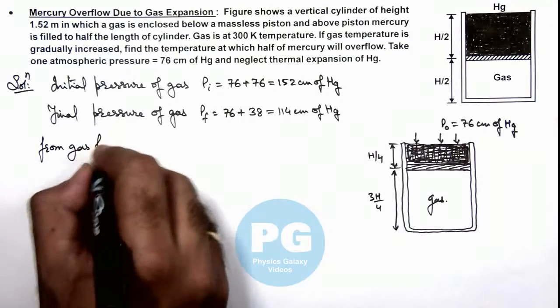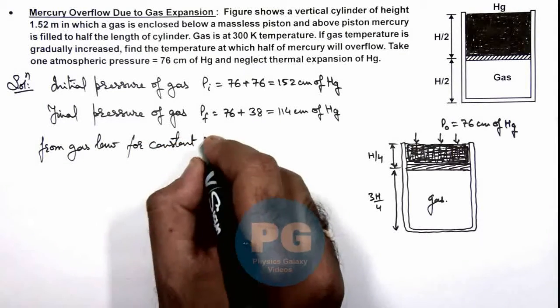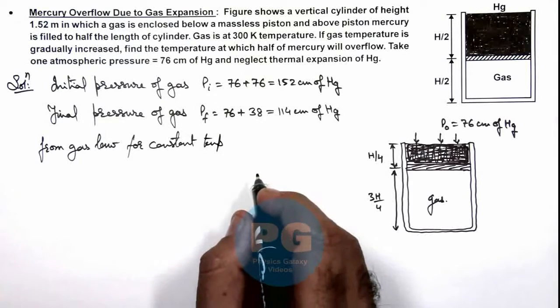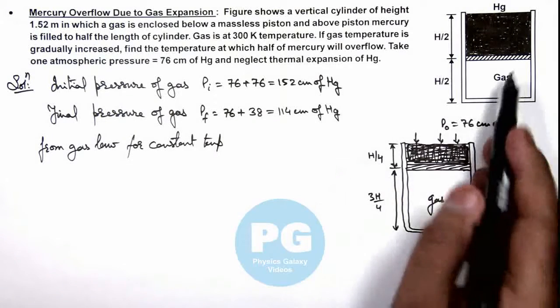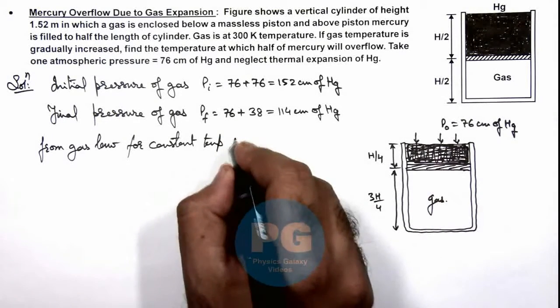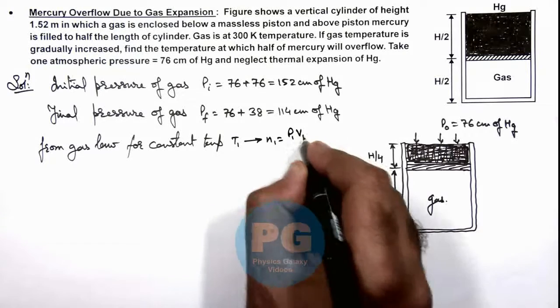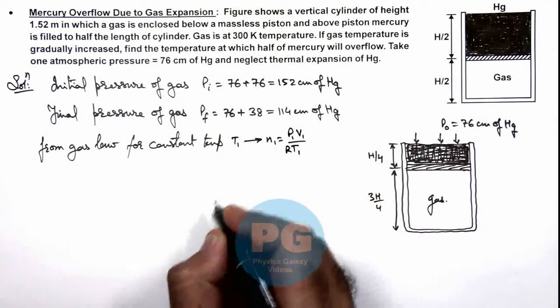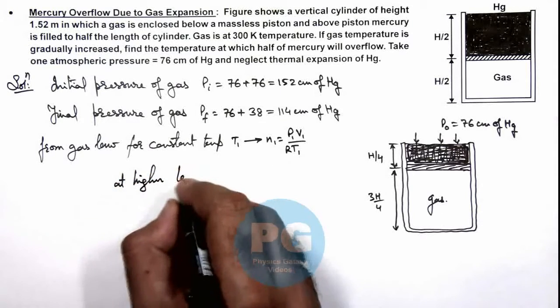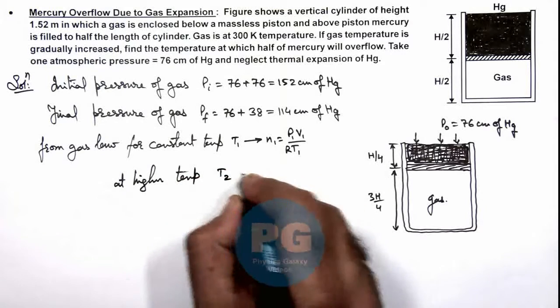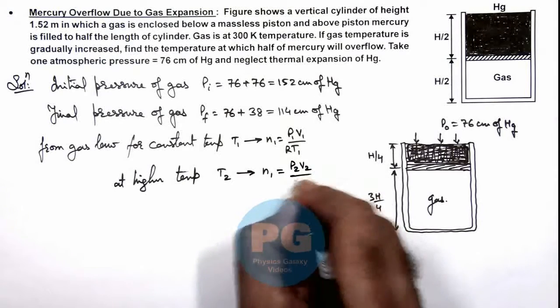From gas law we can write, for constant temperature, number of moles remain constant. For constant temperature T1, number of moles n1 can be written as P1 V1 by R T1. When temperature is increased at higher temperature T2, number of moles of gas still remains same. We can write it P2 V2 by R T2.